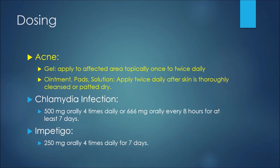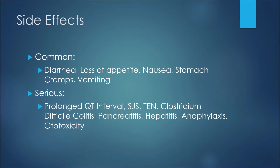For examples of dosing: in the treatment of acne, if a patient is using the gel formulation they would apply it to the affected area topically once or twice daily. If using the ointment, pads, or solution, they would apply twice daily after skin is thoroughly cleansed and patted dry. In the treatment of a chlamydia infection, we may see 500 milligrams given orally four times daily, or 666 milligrams every eight hours for at least seven days. In the treatment of impetigo, 250 milligrams orally four times daily for seven days.